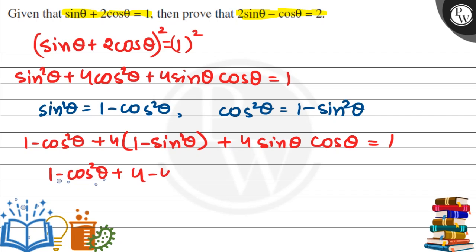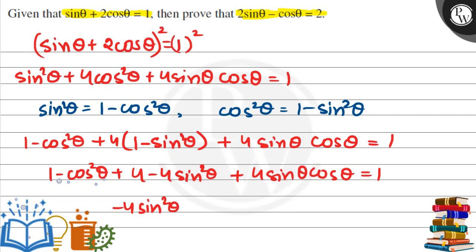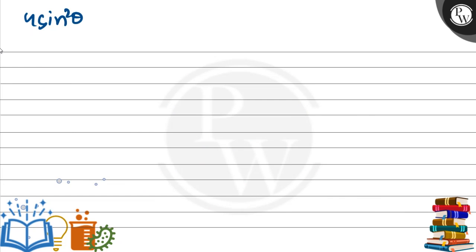Expanding: 1 - cos²θ + 4 - 4sin²θ + 4sin θ cos θ = 1. Simplifying, we get 4sin θ cos θ - 4sin²θ + 4sin θ cos θ = 4, which leads to 4sin θ cos θ = 4.